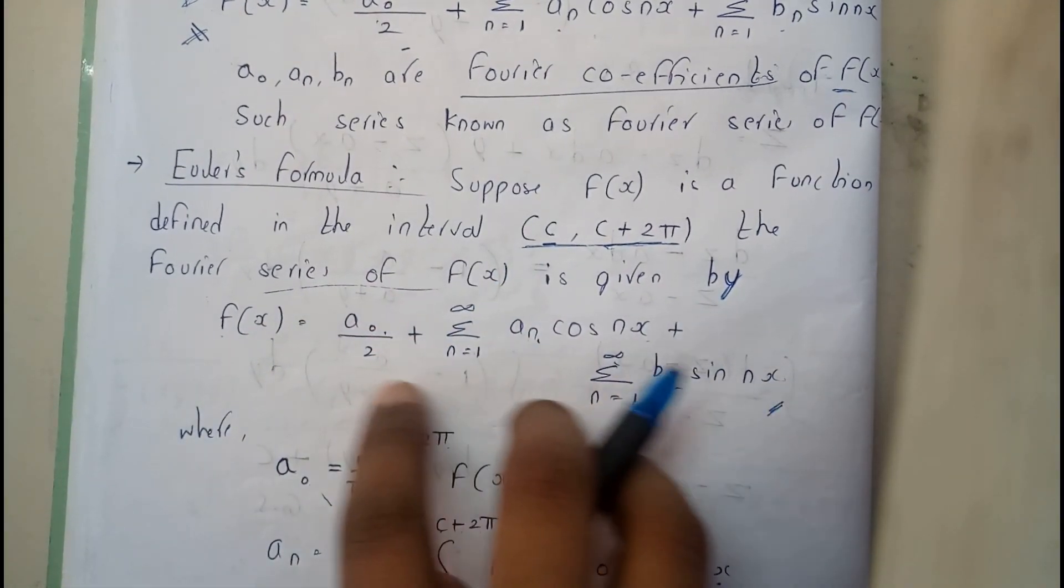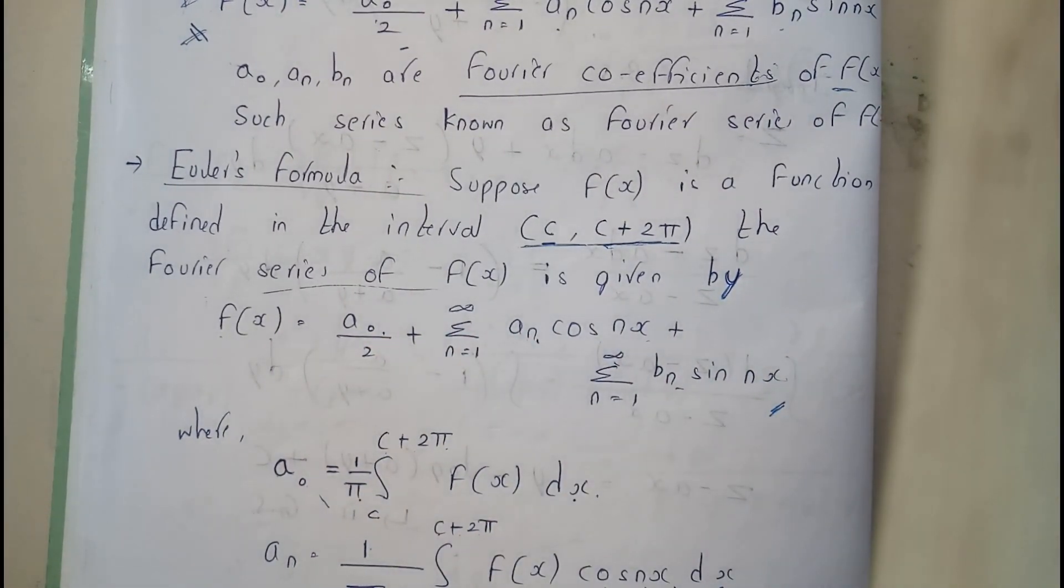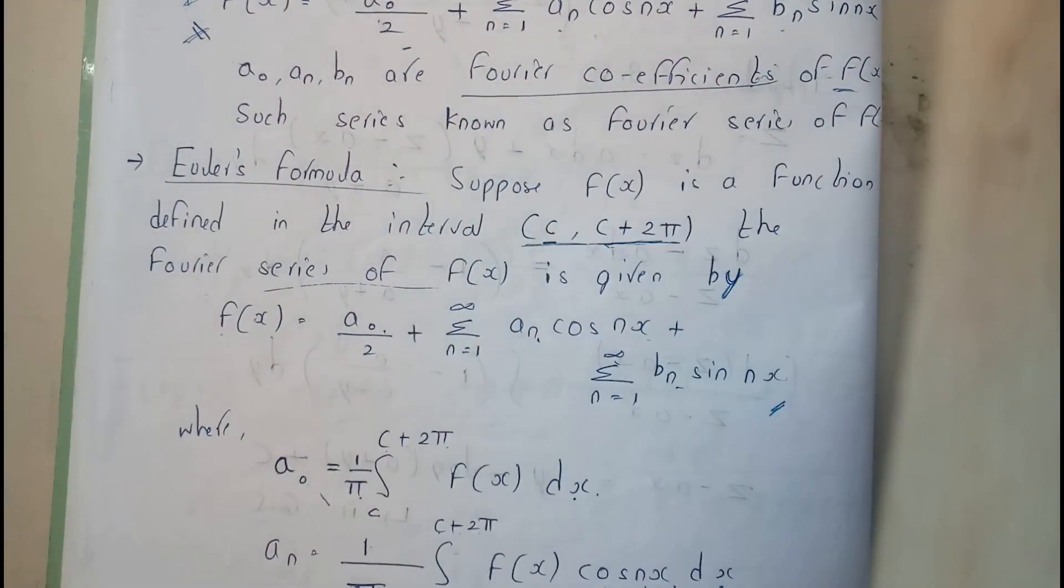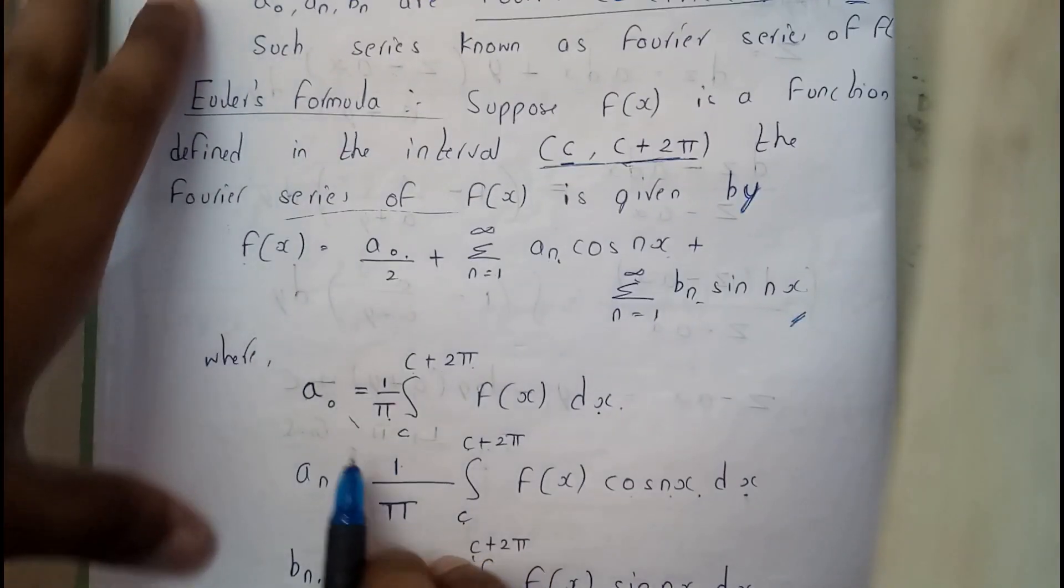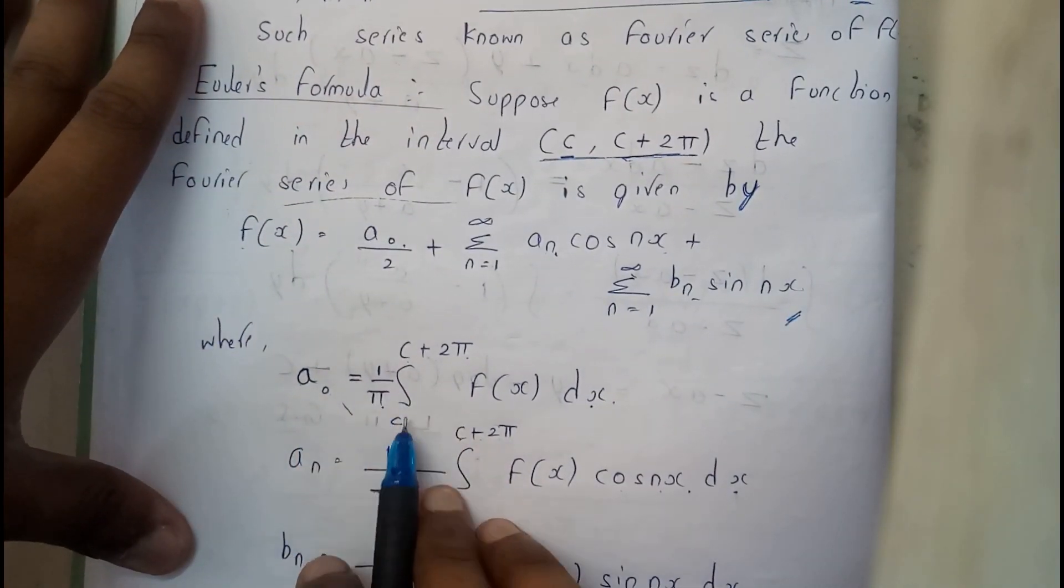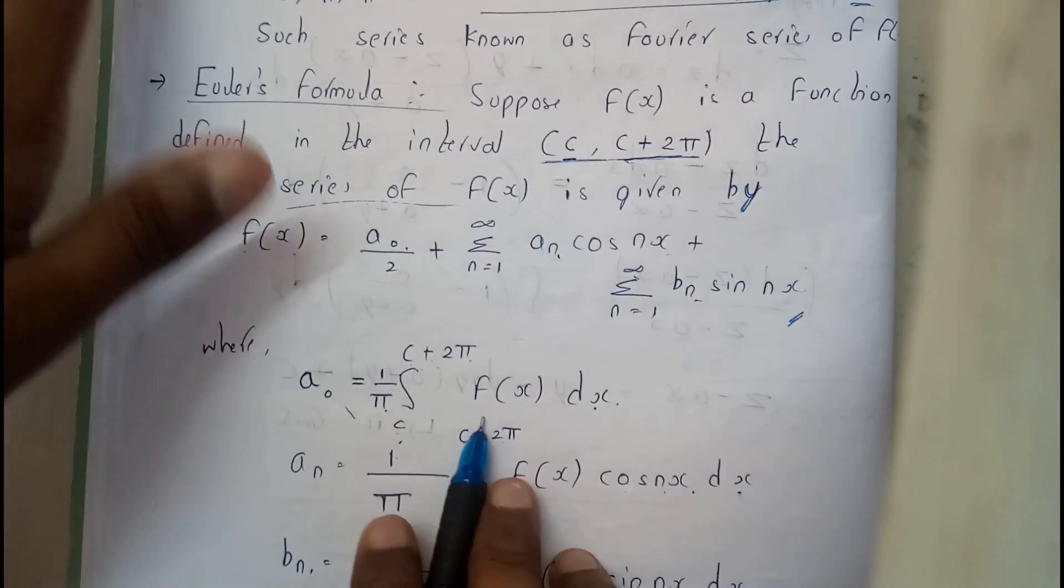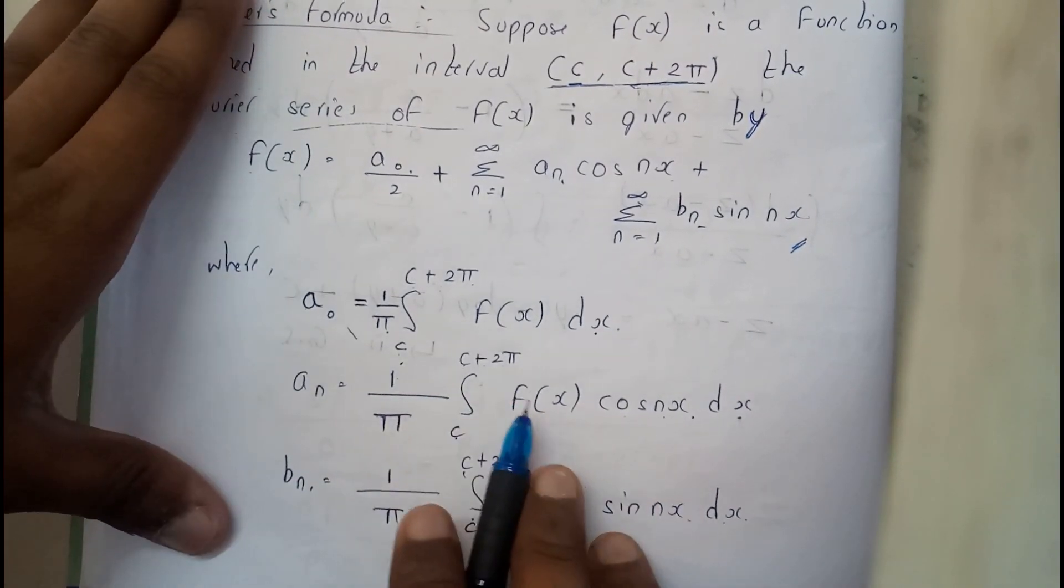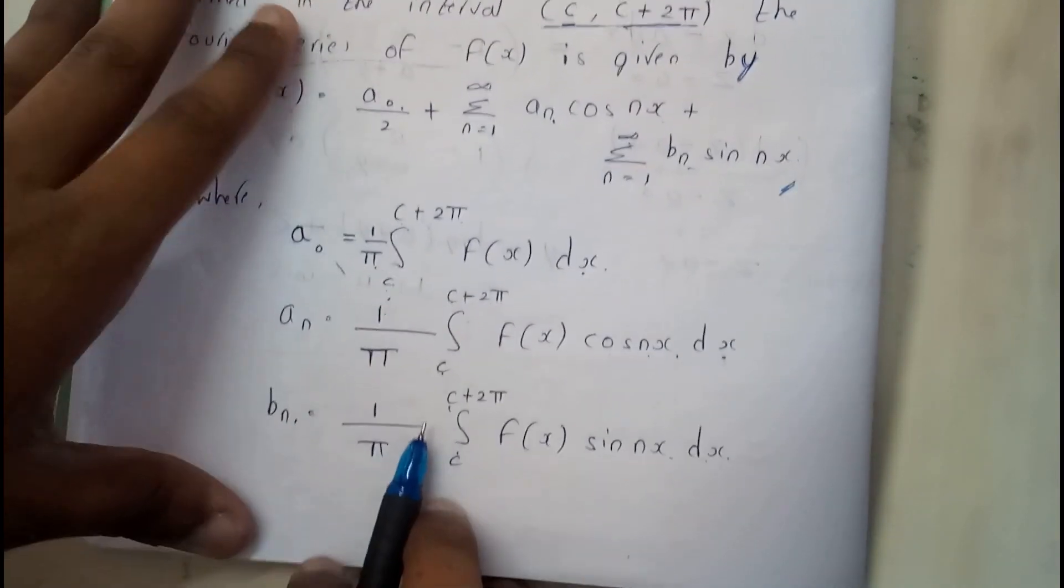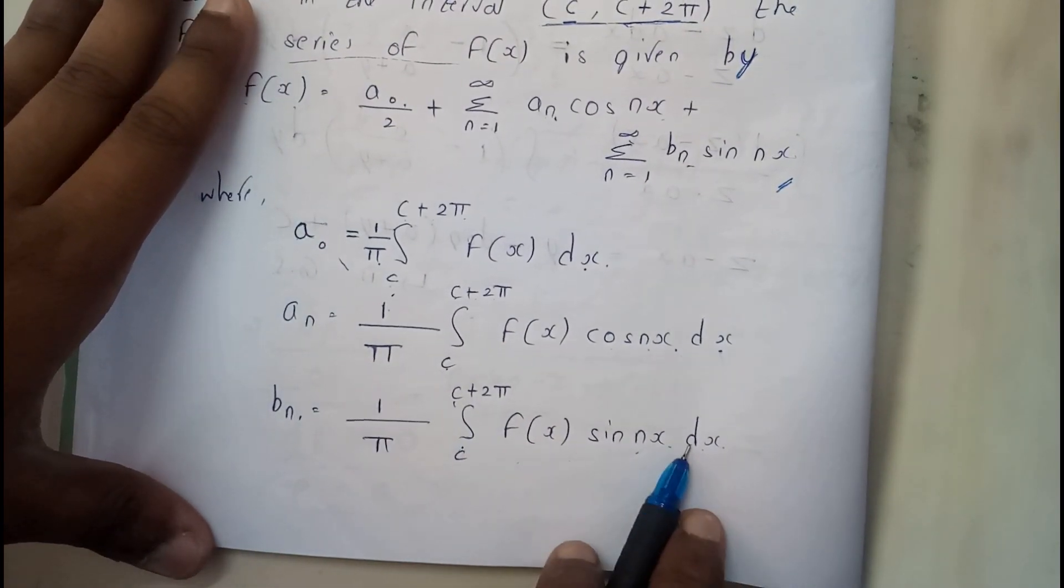Basically, in this we are having three unknowns: a₀, aₙ, and bₙ. Those are the Fourier series coefficients. There are three formulas to find them: a₀ = (1/π)∫[c to c+2π] f(x)dx, aₙ = (1/π)∫[c to c+2π] f(x)cos(nx)dx, and bₙ = (1/π)∫[c to c+2π] f(x)sin(nx)dx.